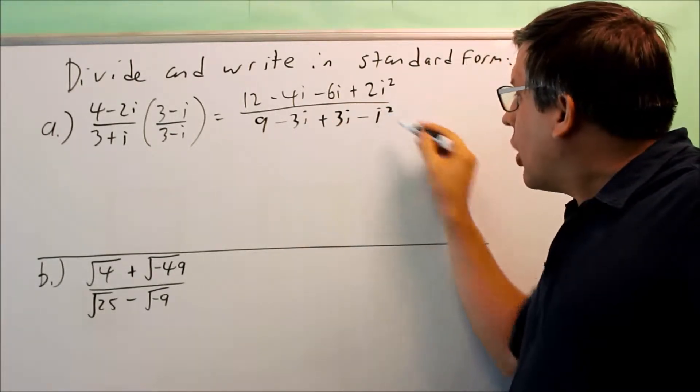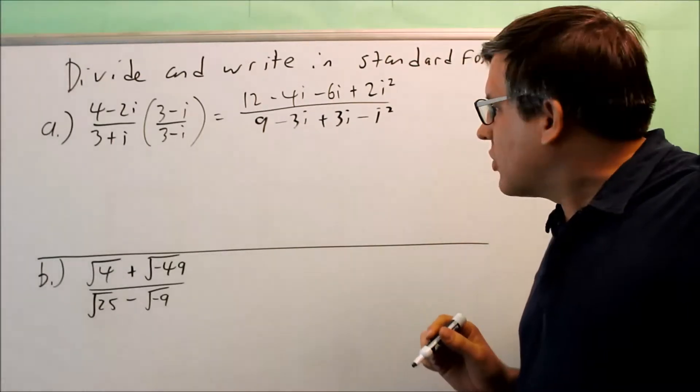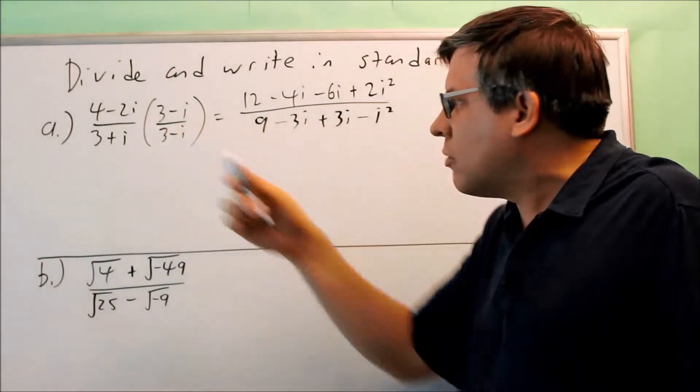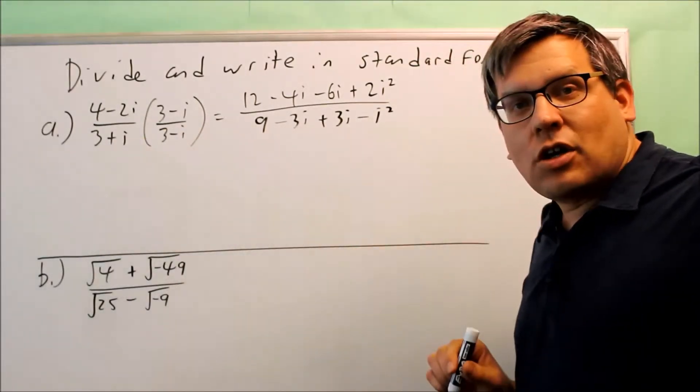And then I have a negative 1 I'm going to put in there for i squared. So once I do that, I'll just get a regular number on the bottom with no more i's. So that's why you always want to multiply by the conjugate of the bottom.